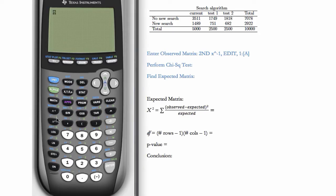So here we'll go to second x to the minus one, which is matrix. Remember to hit the right arrow to go over to edit. And then you can hit enter or choose one for matrix A.